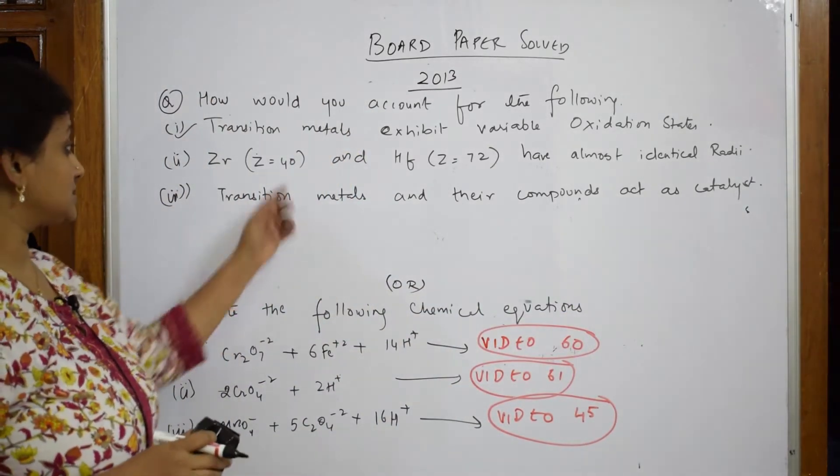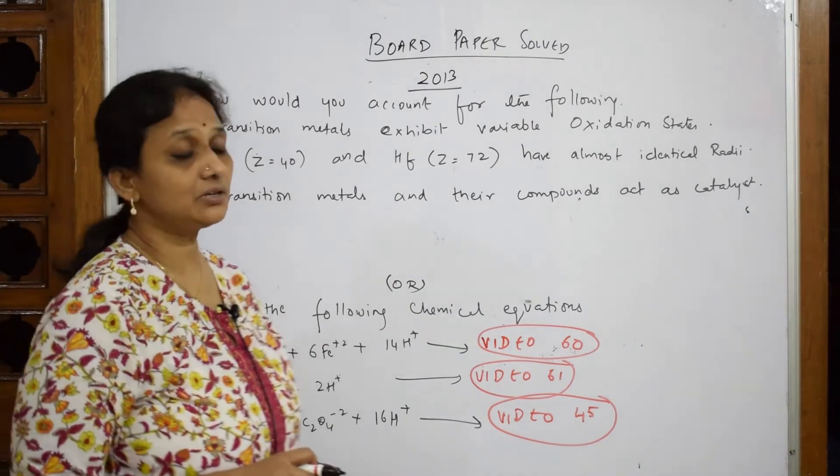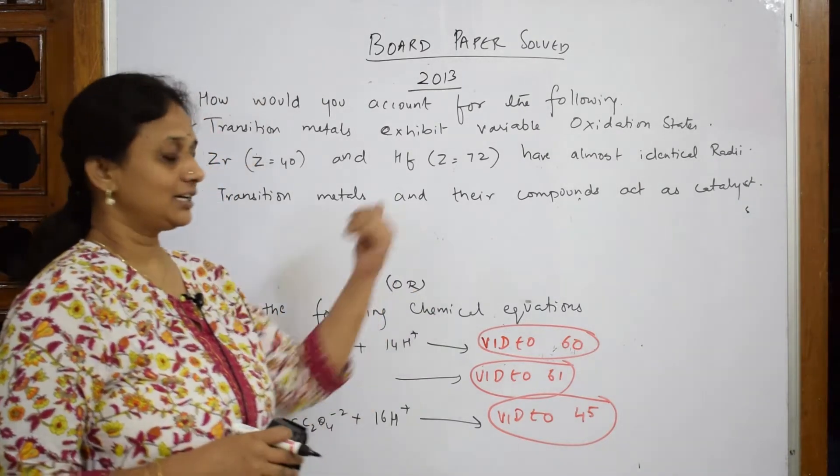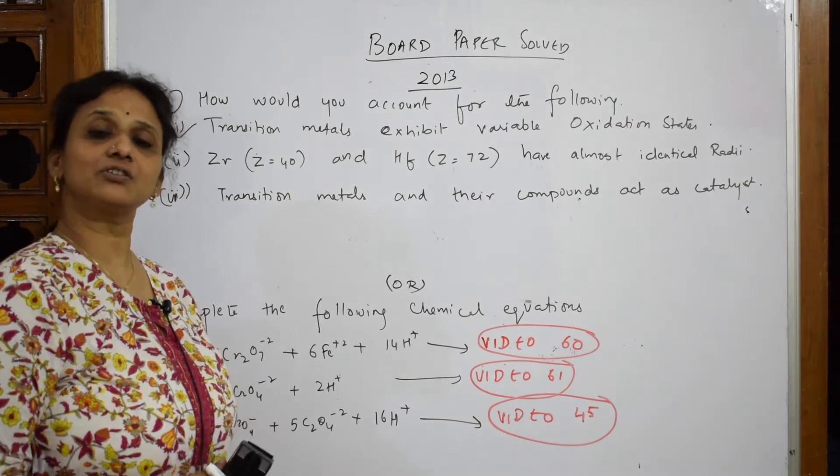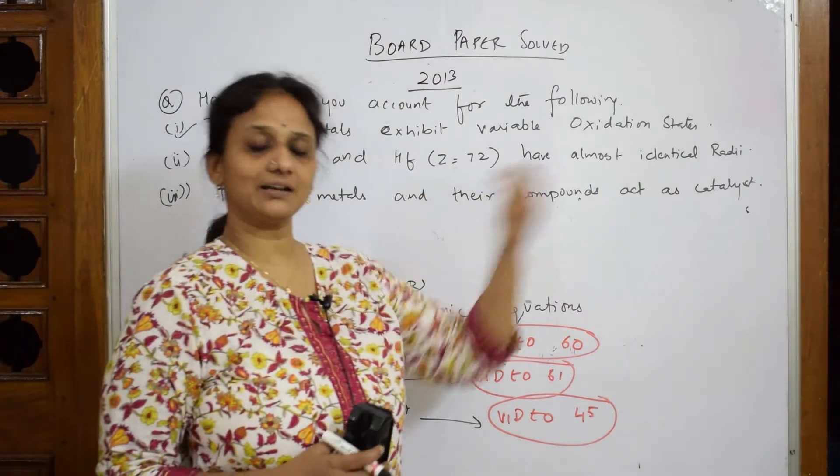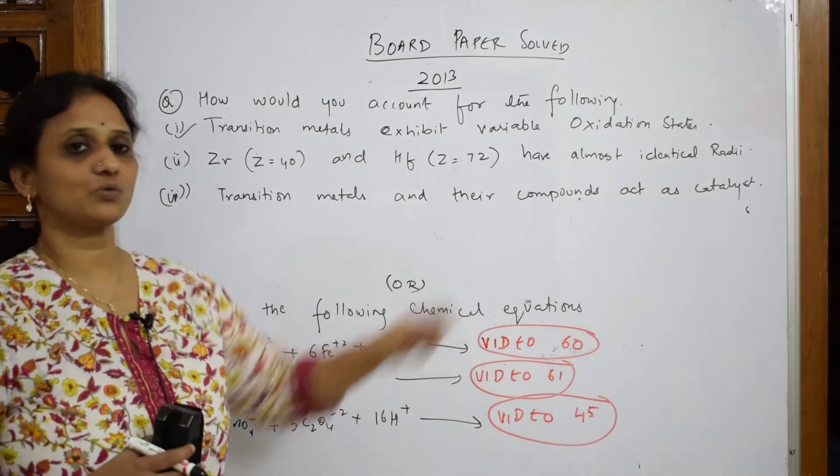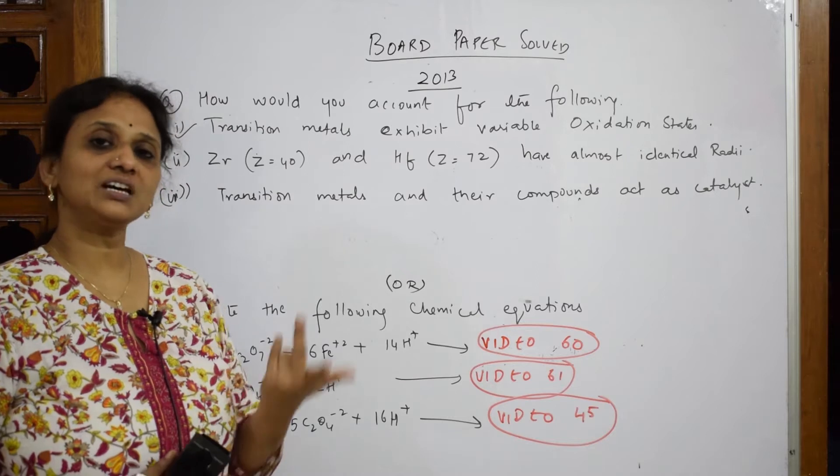This is zirconium, atomic number 40, and hafnium, atomic number 72. Almost both have identical atomic radii. Now this particular question, instead of asking in the form of lanthanide contraction, they are asking in this way. When they give you almost identical radii, same radii, please watch the lanthanide contraction video. You will understand what am I trying to explain. So both have the same radii.